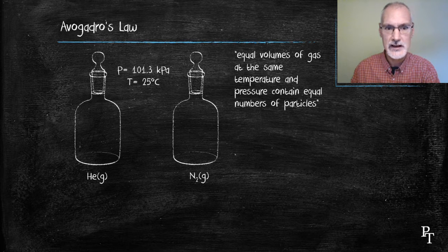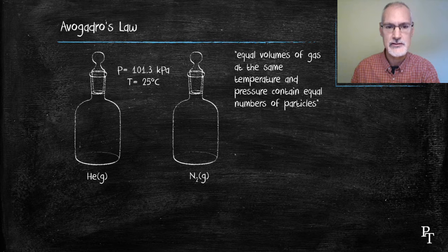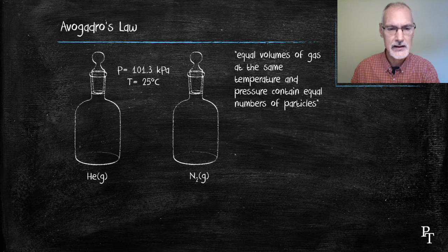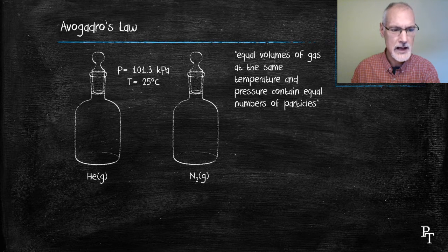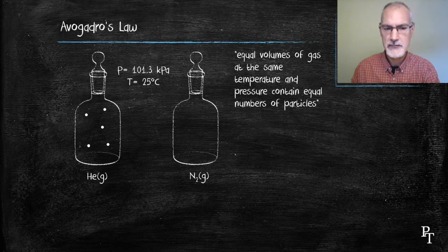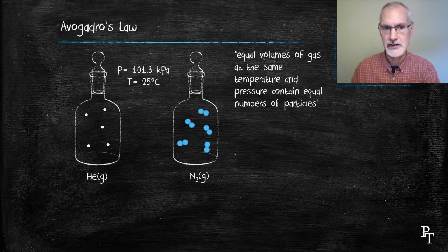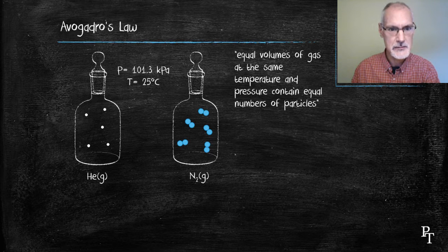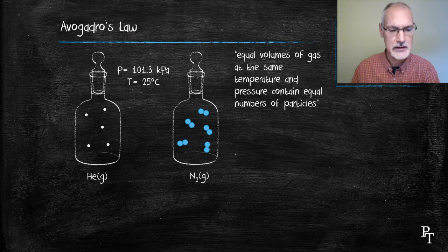They're both at 101 kilopascals and the temperature is 25 degrees Celsius. His law would state that if there were perhaps five atoms of helium present in the one container there would be five molecules of nitrogen present in the other container because they're at the same temperature and pressure and they're the same volume.